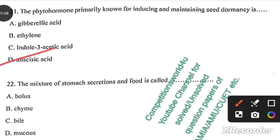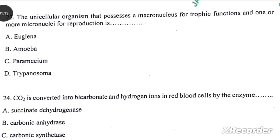The mixture of stomach secretions and food is called Isertransrap, option B. The unicellular organism that possesses a macronucleus for trophic functions and one or more micronuclei for reproduction is Paramecium.